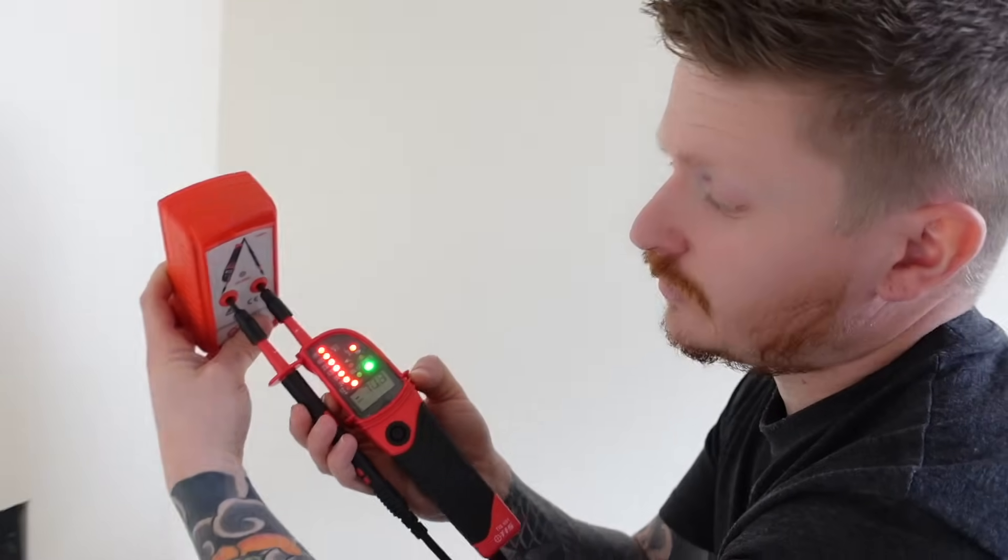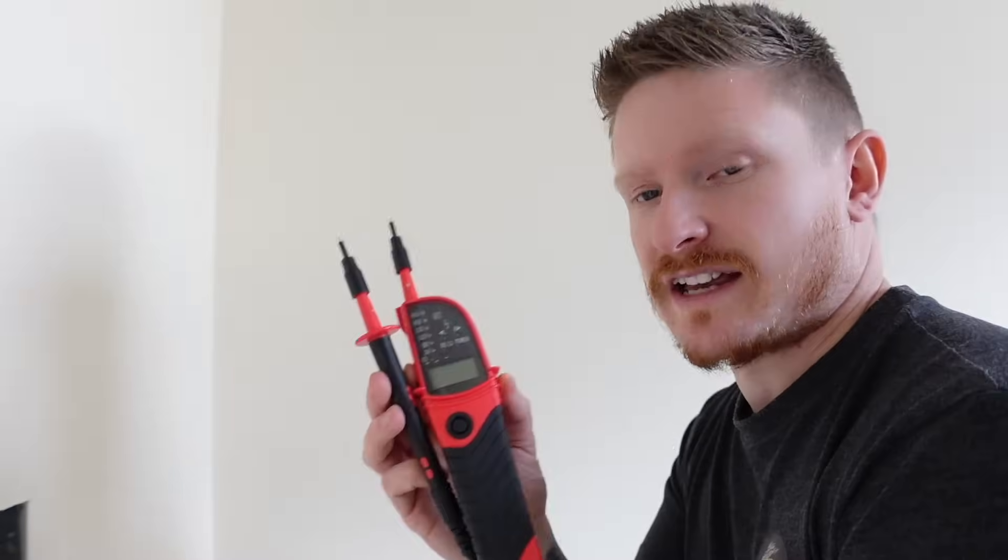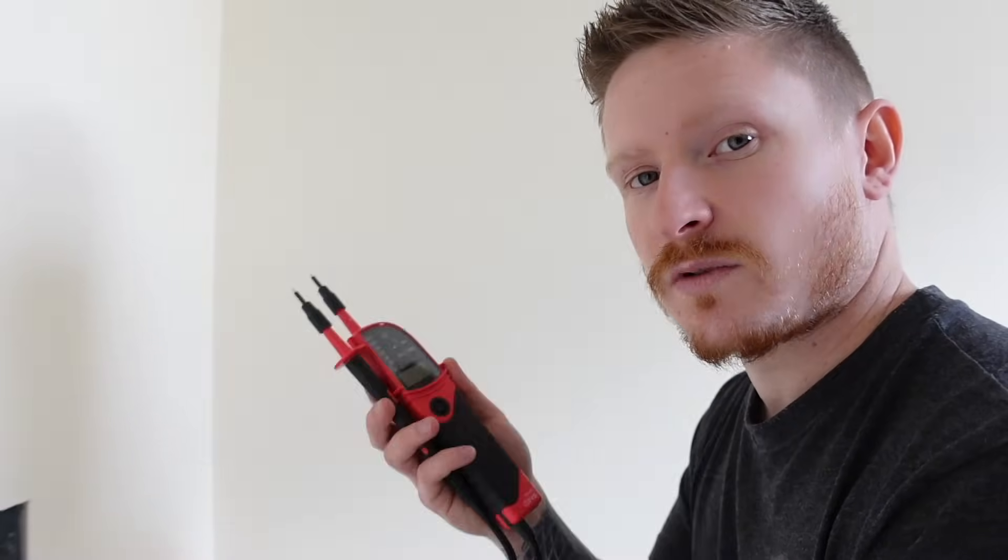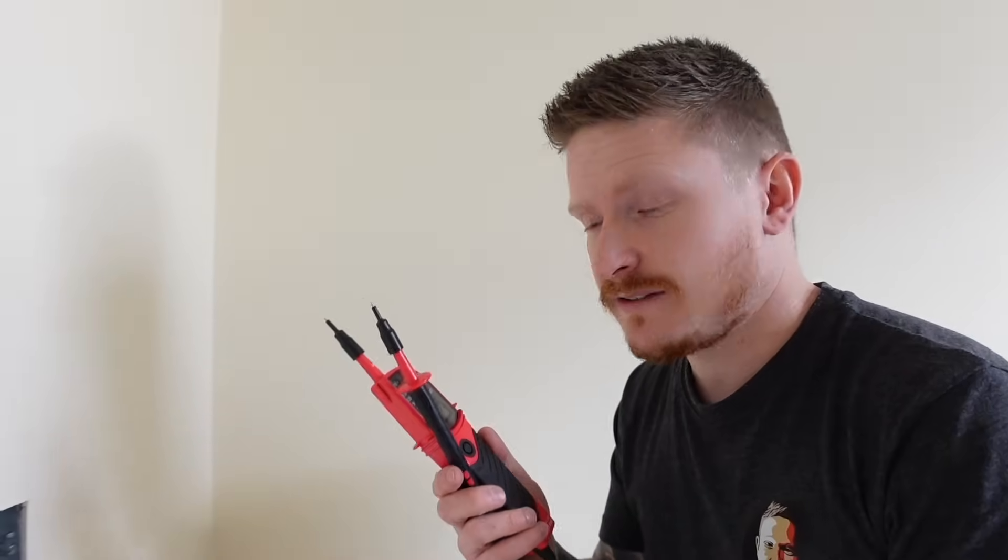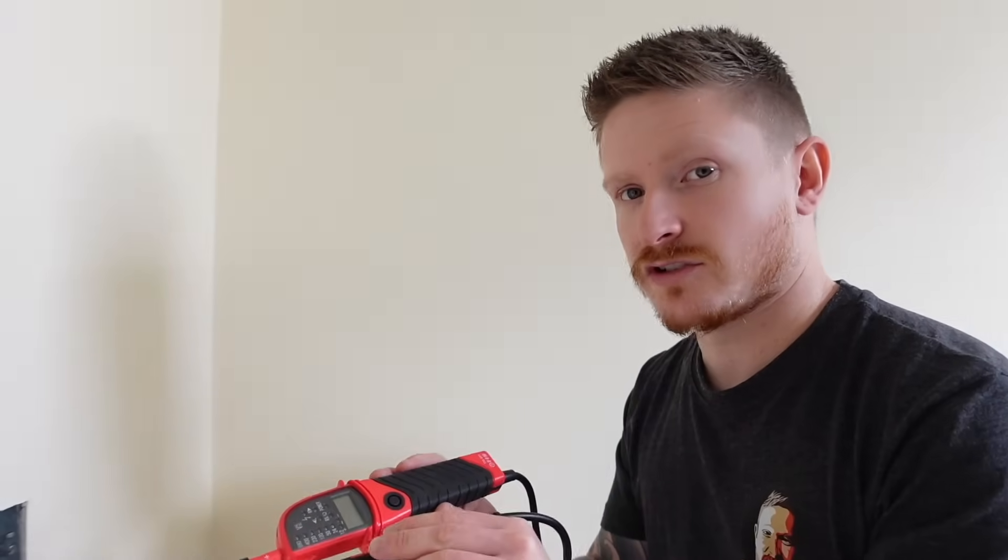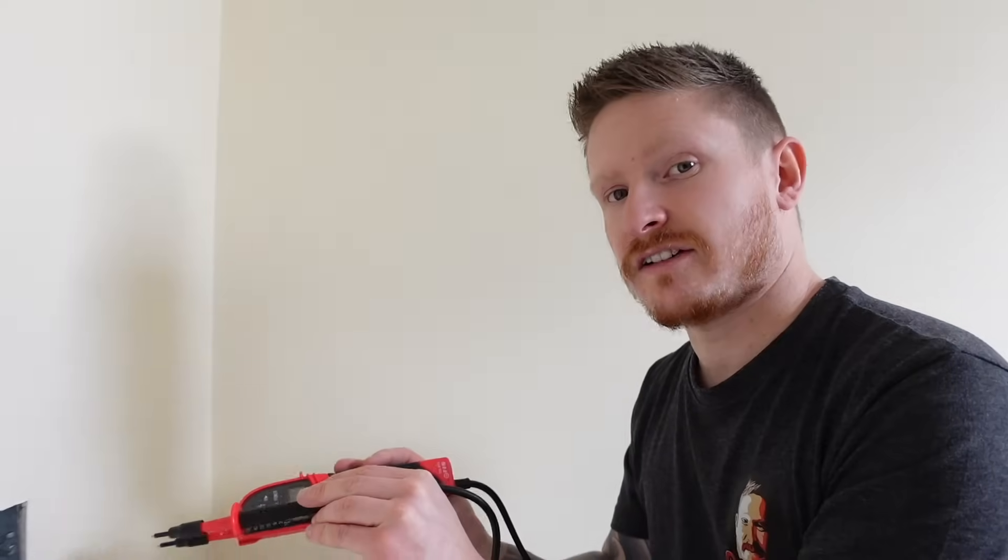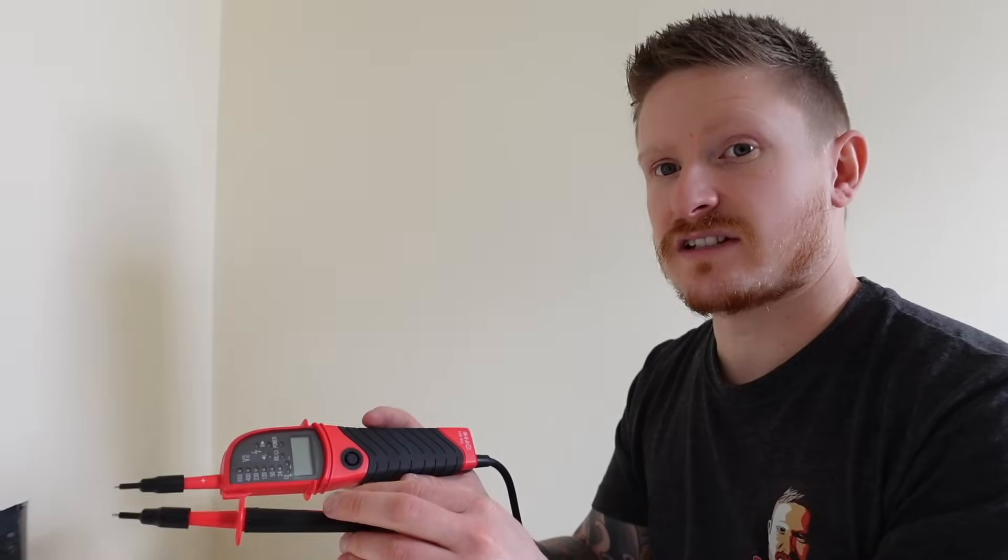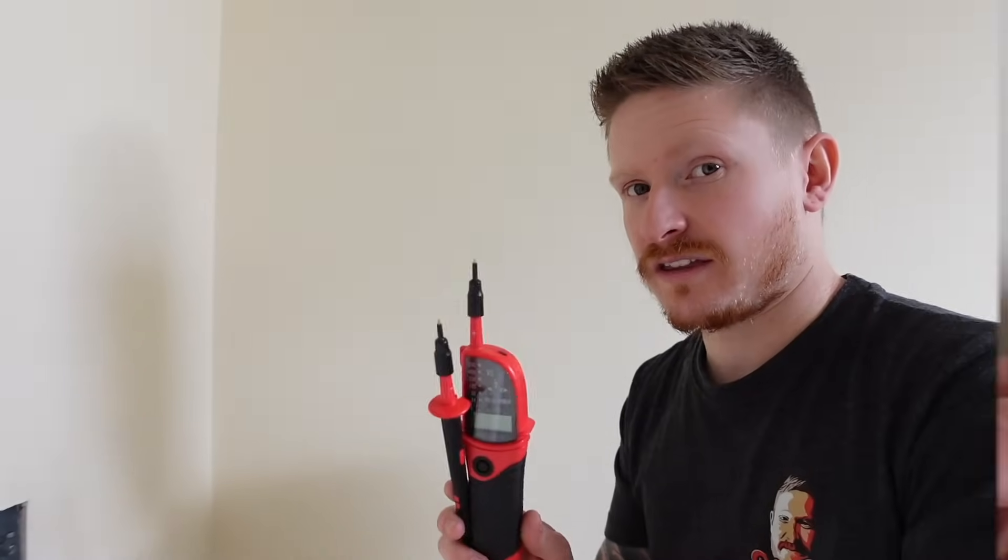We then use the proving unit to test again to check that our voltage tester did not go faulty whilst we were carrying out our test. If you don't have a proving unit you can use a known source of electricity. You would test that on a known source of electricity, you'd then carry out your test and go back to your known source of electricity and that would do the same thing.